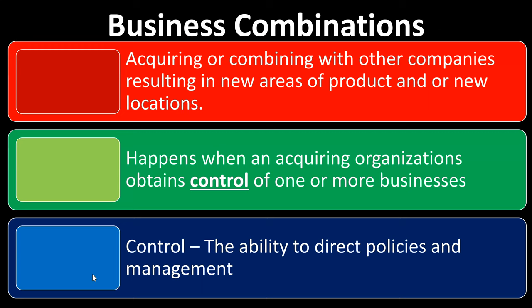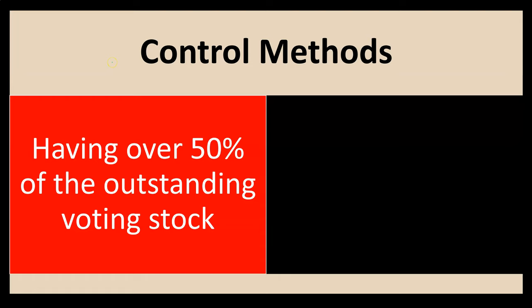Control is the ability to direct policies and management. If you have ownership of stock in a corporation, you are technically the owner, but you exercise very little control if your ownership percentage is very small. As your percentage ownership goes up, you have more control over what the corporation does — because you have control over management through voting. If you have over 50% control, then you essentially have control over management and a lot of influence over the corporation.